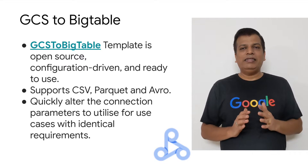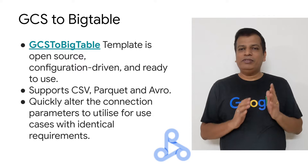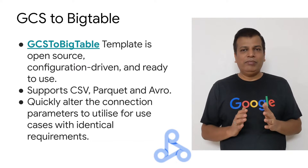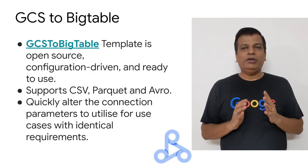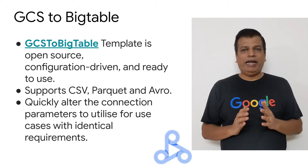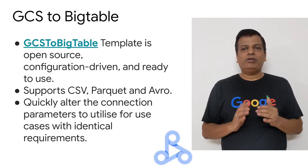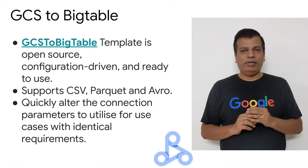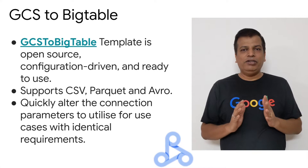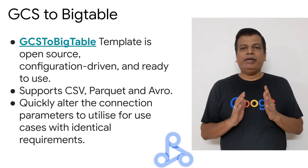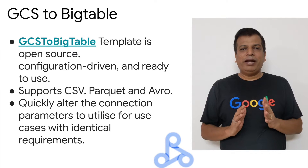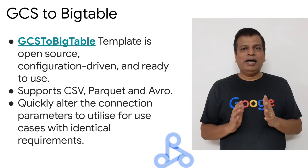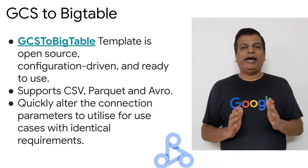One of the common ETL tasks is to load data from GCS to a low-latency database like Bigtable, which can power up any UI or real-time query platforms. This template supports CSV, Parquet, and Avro file formats. These templates are ready-to-use Spark workloads and can be altered with connection parameters for use cases with identical requirements, and development can be completed in no time.